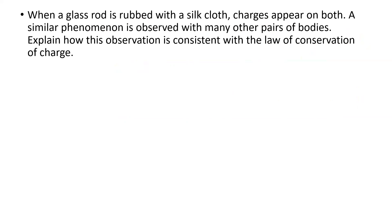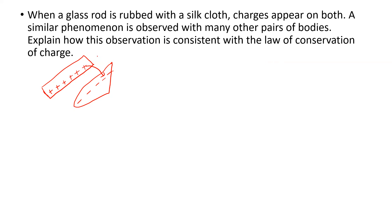Question 5: When a glass rod is rubbed with a silk cloth, charges appear on both. This is charging by friction. In friction, electrons are loosely bound in the material. Compared to glass, electrons in silk are more loosely bound, so glass loses electrons and becomes positively charged. If glass loses 50 electrons, it has +50 charge, and silk gains those 50 electrons, giving it −50 charge.